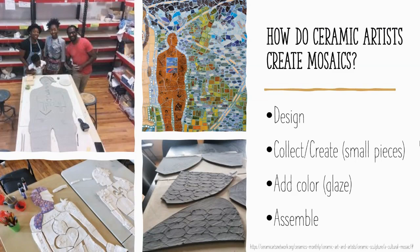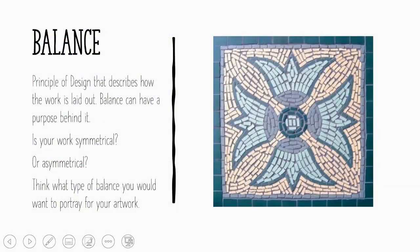Once they've designed and created their pieces — often using slabs — they could choose to add color or glaze and then assemble in the final stage. Balance is a principle that describes how the work is laid out and can have different purposes. You could choose to make your mosaic symmetrical, or instead make your piece asymmetrical where it wouldn't be so balanced through the middle.